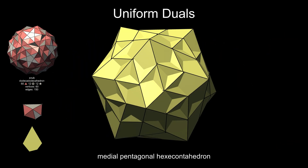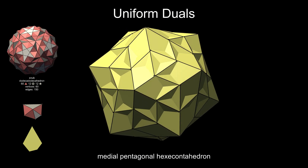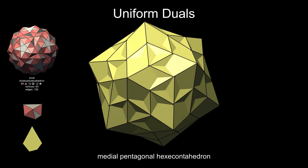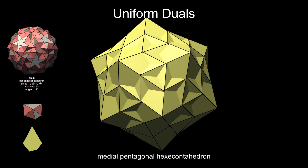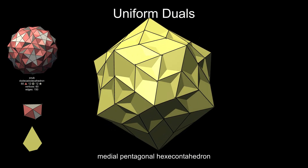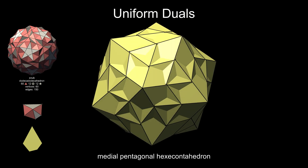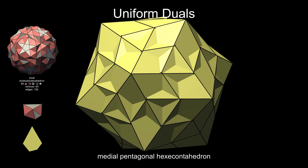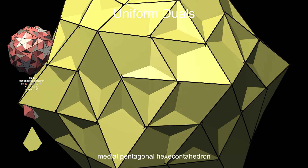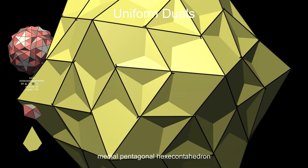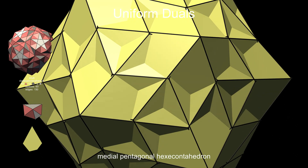Duals of more complicated snub polyhedra tend to be equally complicated. This medial pentagonal hexacontahedron is the dual of the snub dodecadodecahedron. It has 60 irregular pentagonal faces. A closer look reveals several small facets on the surface, where vertices and edges come close to each other but don't quite meet.